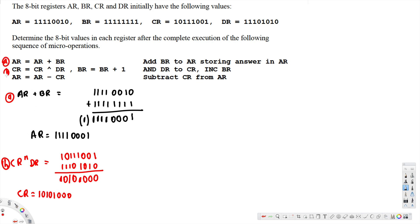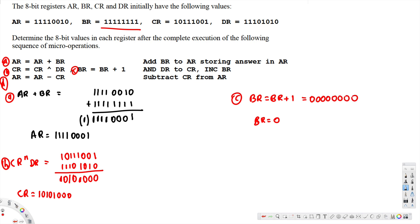Now for part (c): BR = BR + 1. BR is currently 11111111. Adding one to it: one plus one is zero with a carry, and this carry propagates all the way through every bit position, resulting in all zeros. BR becomes 00000000, with the final carry out neglected.